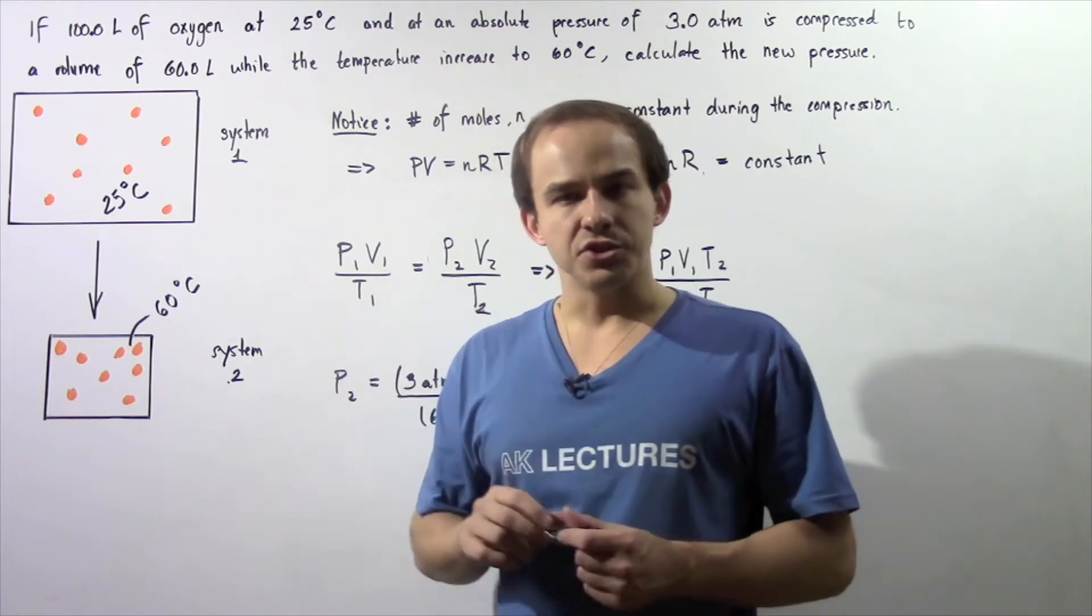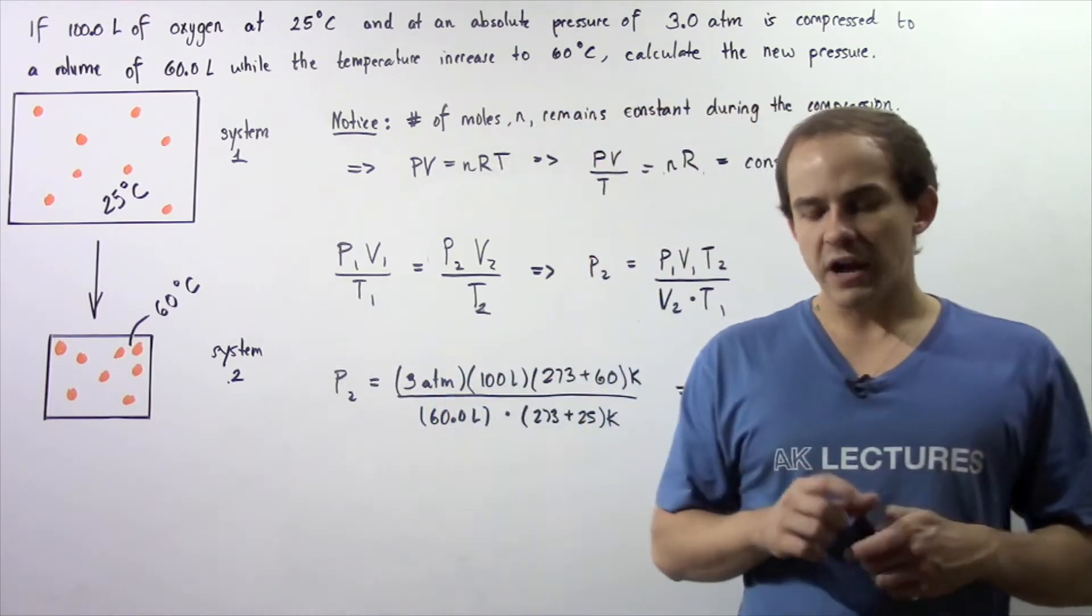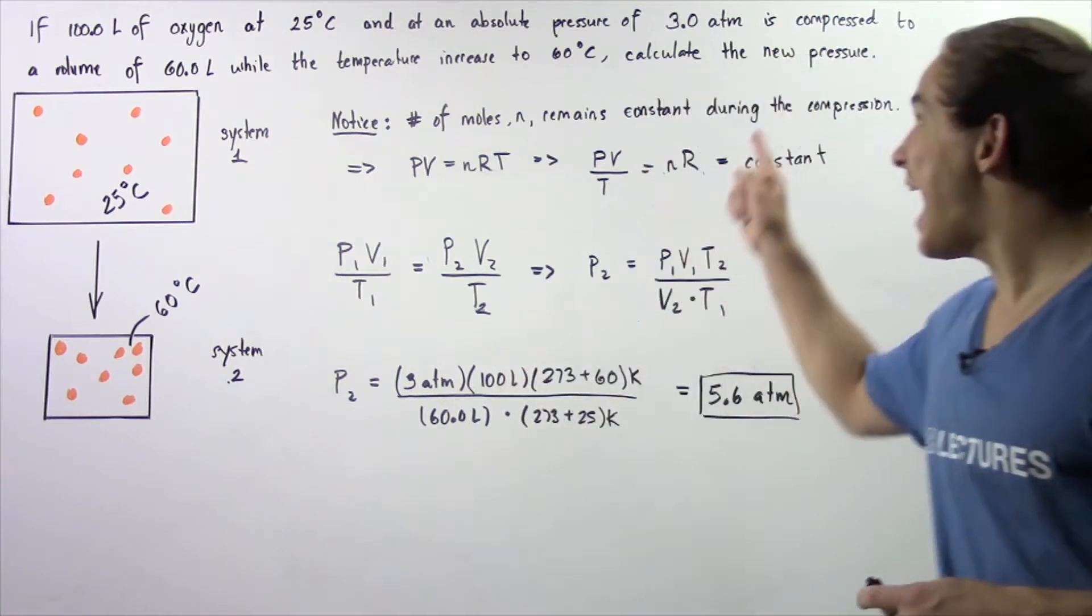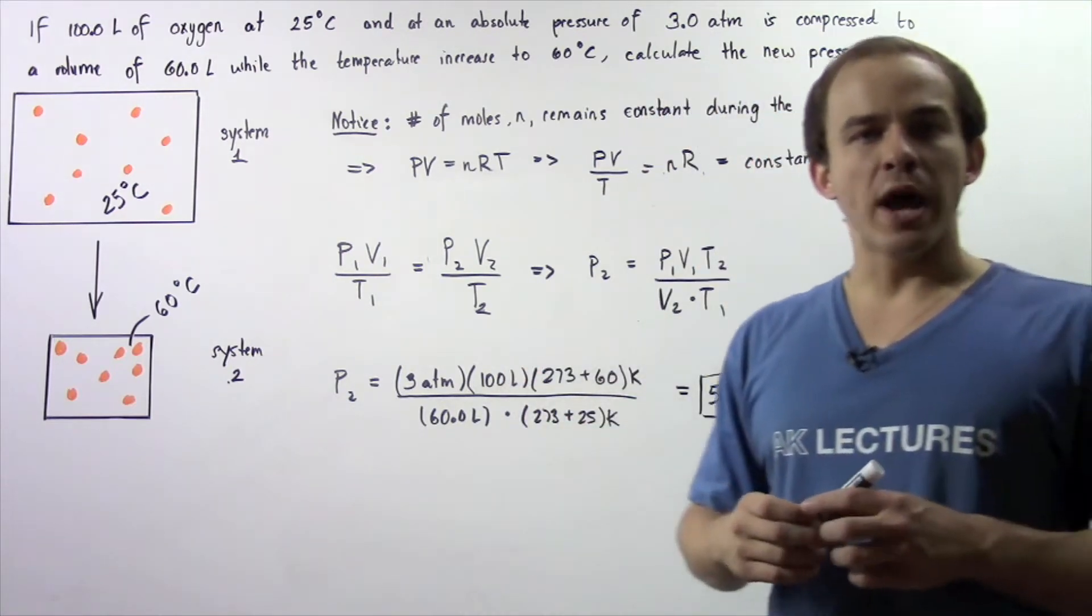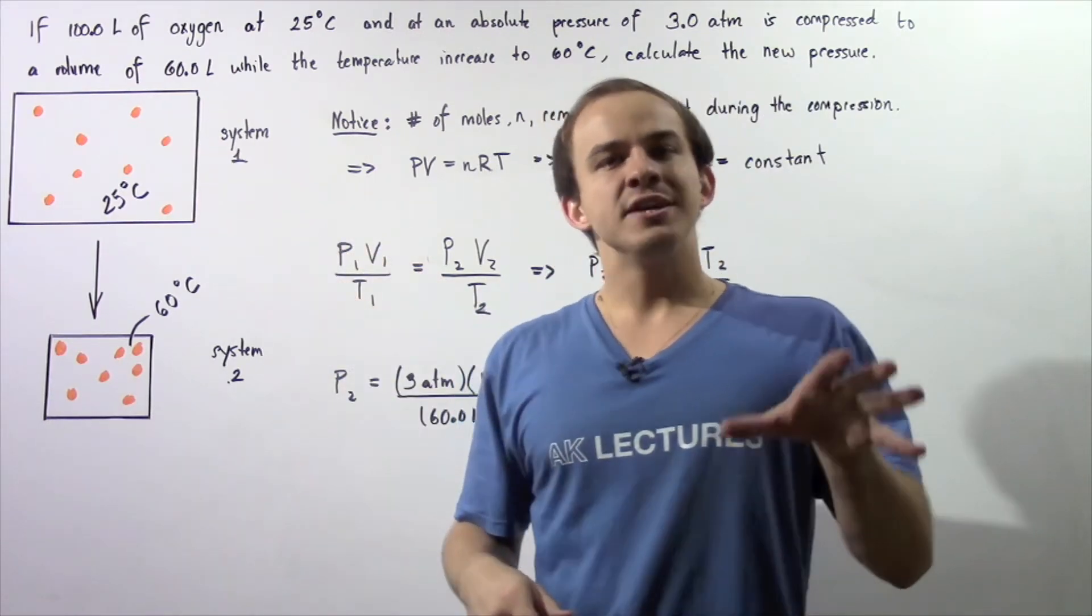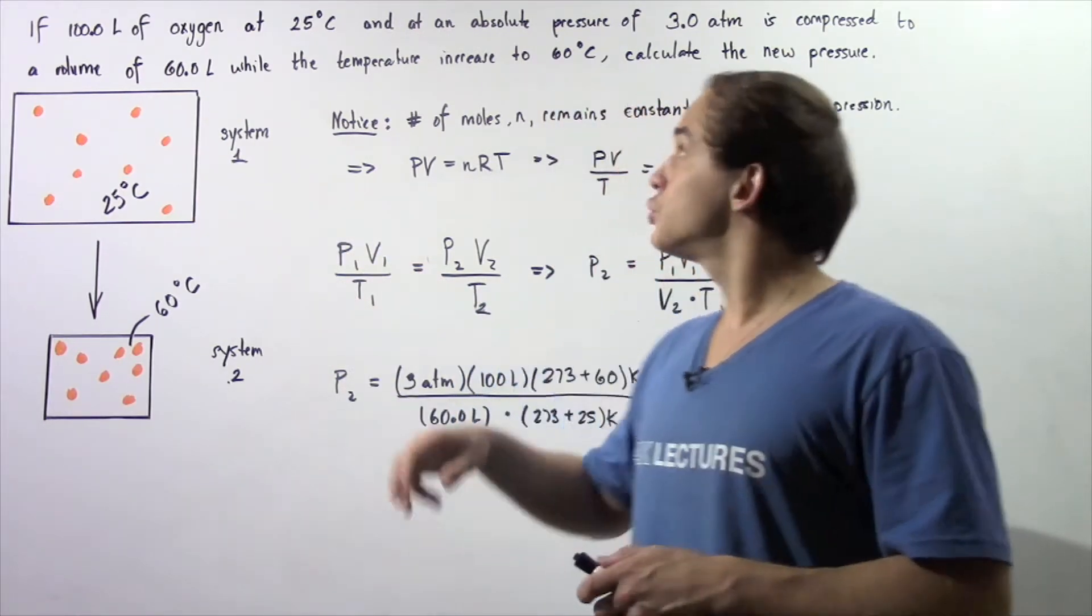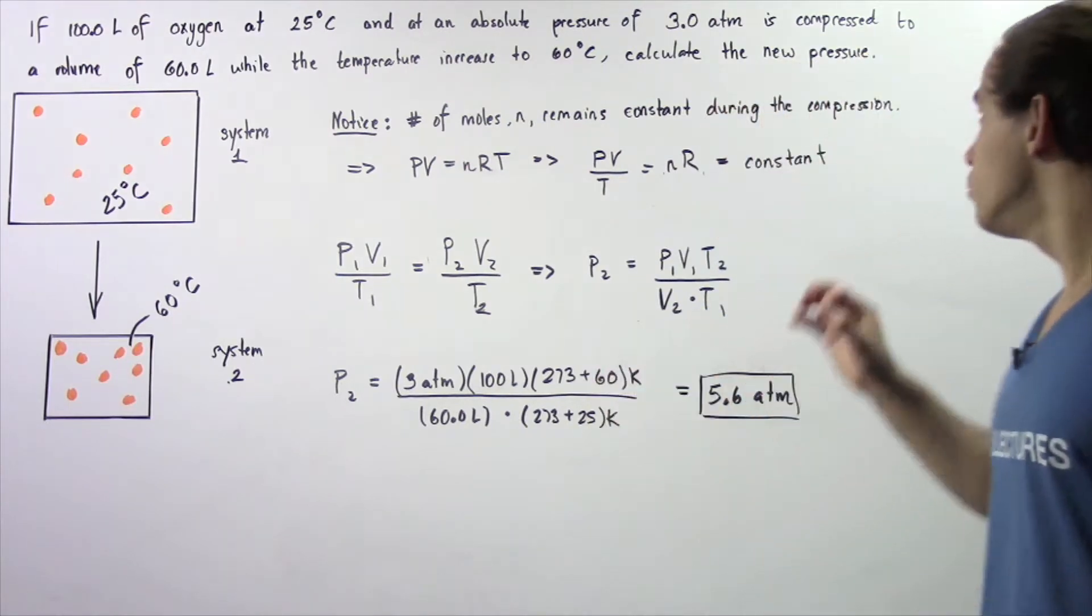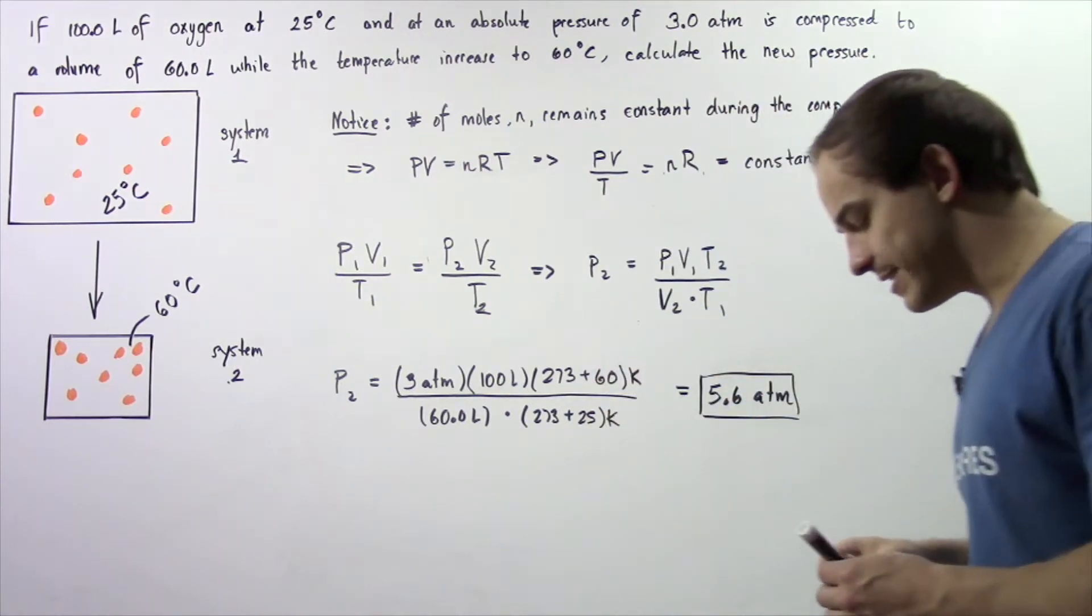If 100 liters of oxygen at 25 degrees Celsius and an absolute pressure of 3 atmospheres is compressed to a new volume of 60 liters and there is an increase in temperature to 60 degrees Celsius, calculate the new pressure of our system.